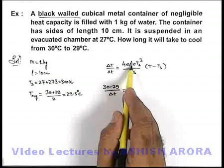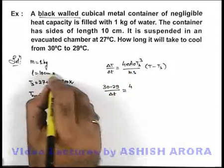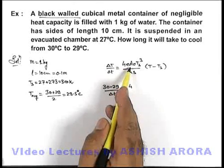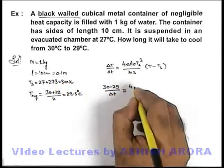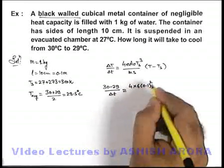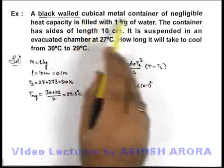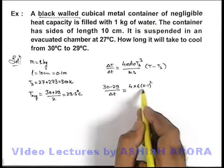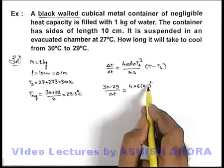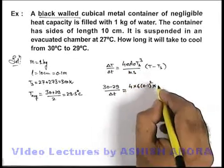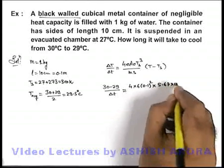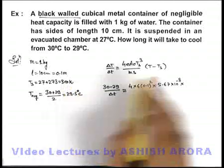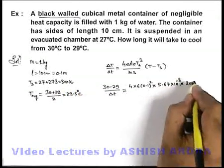If we talk about its area, the area can be given as L equals 0.1 meter. We can write the area to be 6 times (0.1)² because it is a cubical container with 6 sides, and since it is suspended, radiation will occur from all sides, so it will be 6L². Multiplied by sigma, we substitute 5.67 times 10 to the power minus 8. Multiplied by the cube of the surrounding temperature, that is 300 cubed.